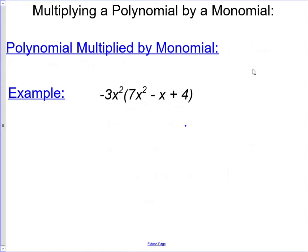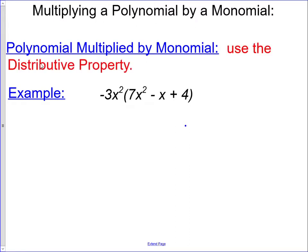In today's video we're going to talk about how to multiply a polynomial by a monomial. The process we're going to use is fairly straightforward — we're going to use the distributive property. Let's take a look at our first example: we have the monomial negative 3x squared, and we're going to multiply the polynomial 7x squared minus x plus 4.